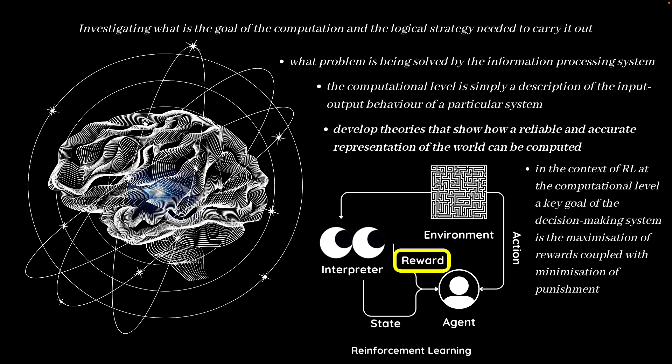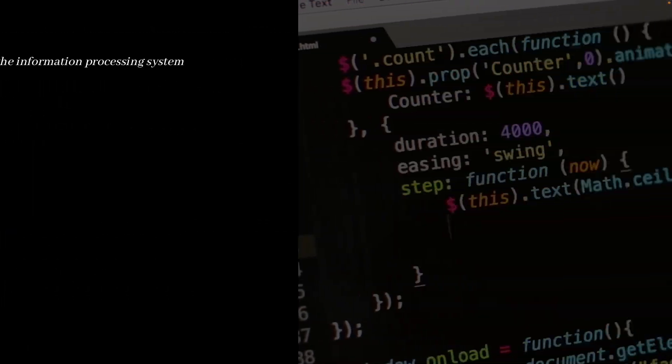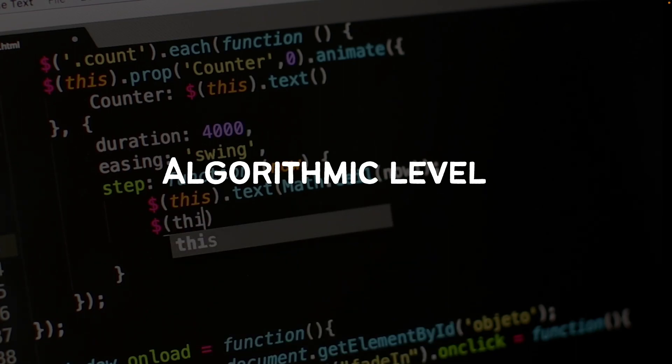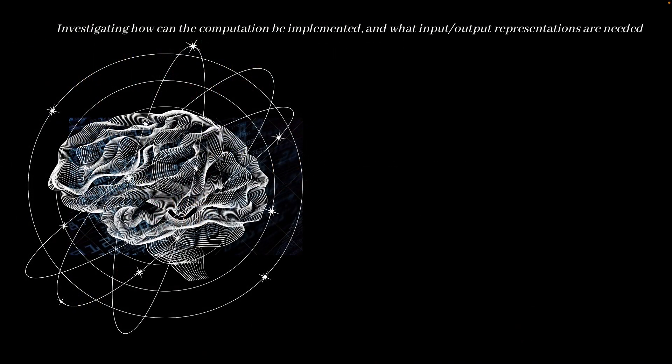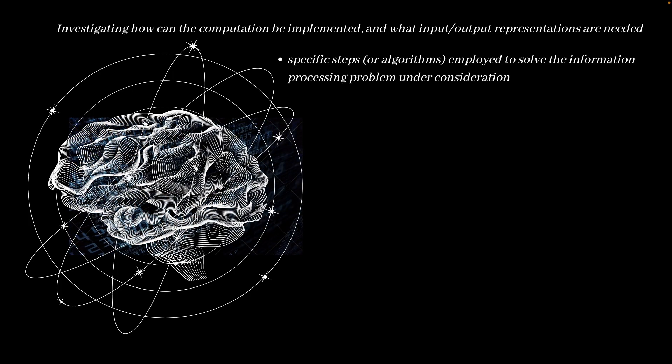So what is the algorithmic level of analysis then? At the algorithmic level, we are essentially asking a slightly different question. Here, we want to investigate how can the computation be implemented and what input-output representations are needed for this. The algorithmic level of analysis focuses on the specific steps or algorithms employed to the solving of a problem by the information processing system.